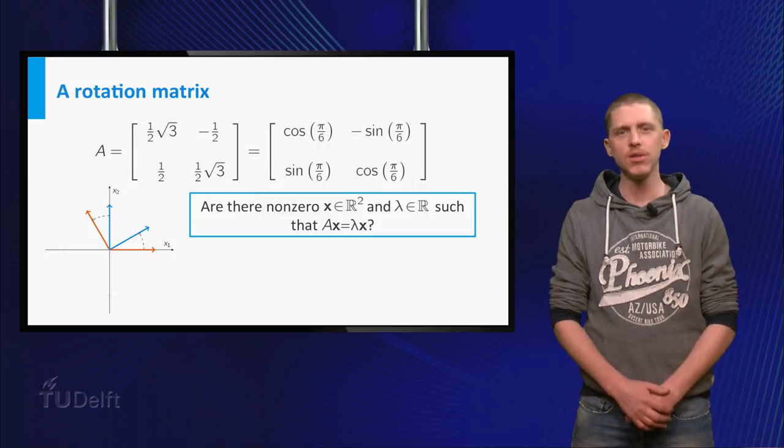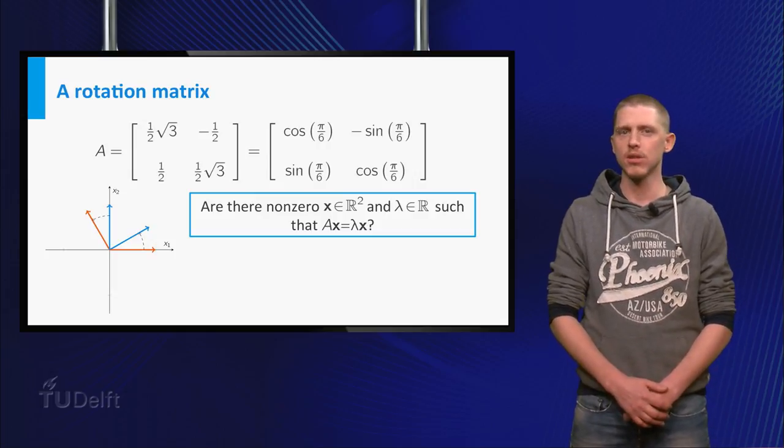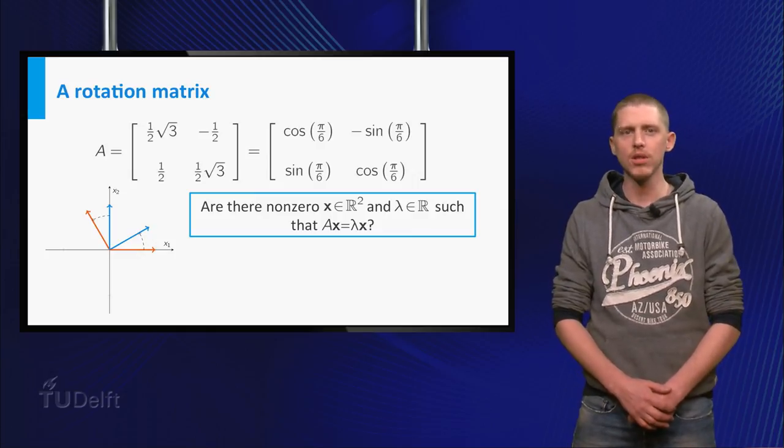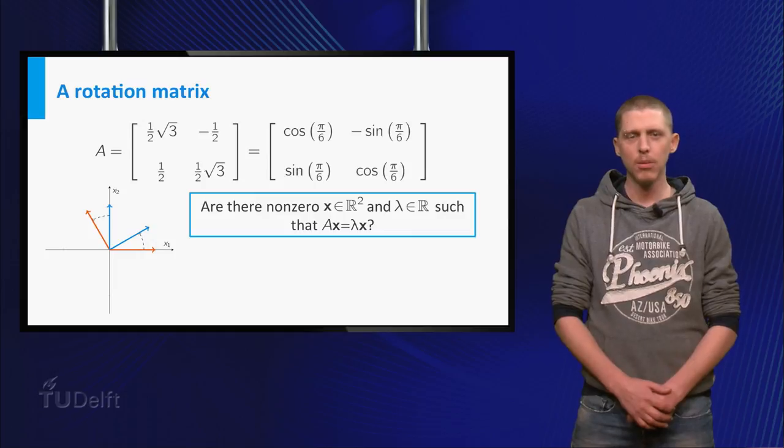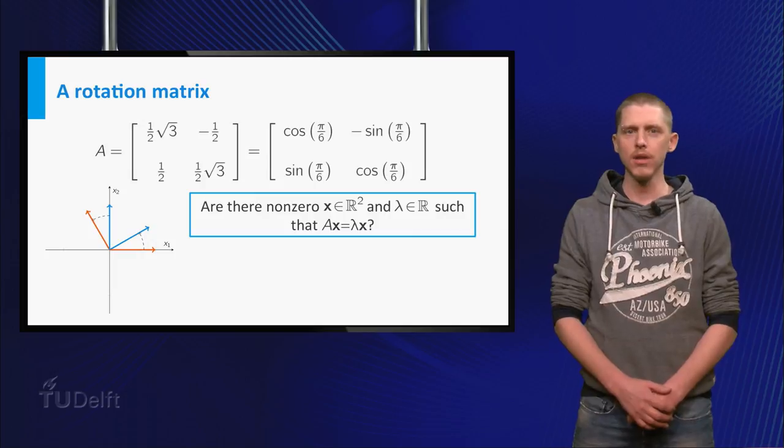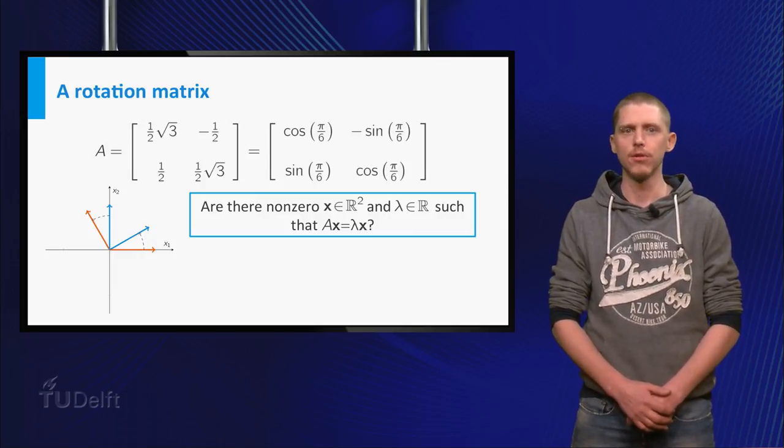If you think about what this means, you see that you want a vector x, such that A times x gives back a multiple of x. A multiple of x always lies in the span of x, but in our example A times a non-zero vector x can't lie in the span of x, because the angle between x and A times x is equal to 30 degrees.